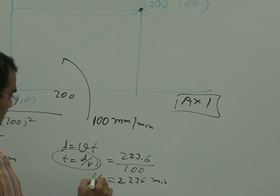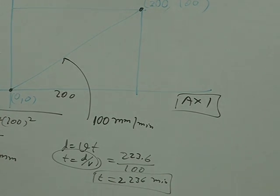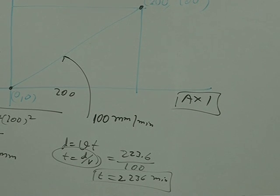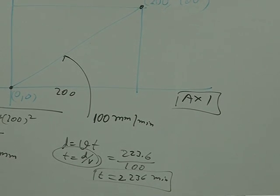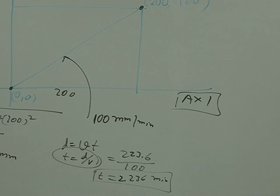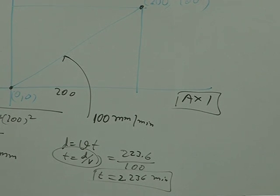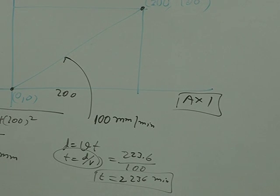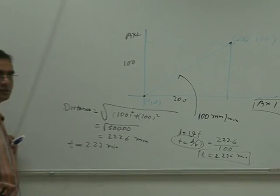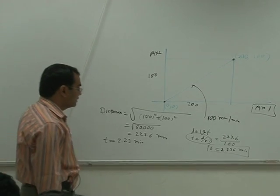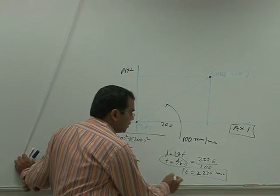So this time is available with you. This, correct, d by v, t is equal to d by v, d is equal to vt, integration of velocity. We consider constant velocity.